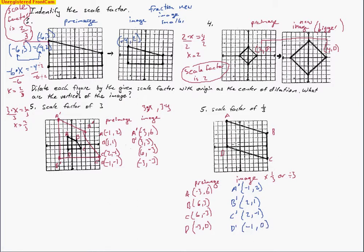Now I'll go ahead and plot the points. One space left, two spaces up — that's A prime. Two spaces right, one space up — B prime. Two spaces to the right, one space down — C prime. And one space left, zero spaces up or down — D prime. Now I've got my points, so I can draw the lines between them. There's the shape — same shape, just a smaller reduction in size. Those are the types of problems you'll see on tonight's homework. Good luck.